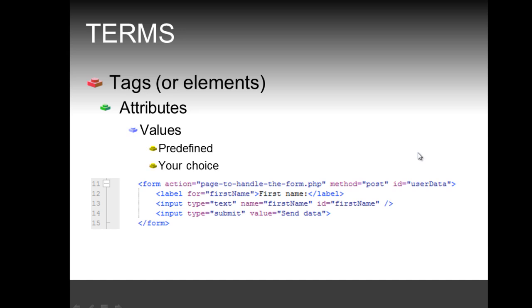It's important to note that in HTML, values are either predefined or of your choice. For example, the method attribute expects predefined values — either 'get' or 'post'. Whereas the ID and action attributes are up to you. The ID should be unique on the page; in this case I've given it the value 'userData' with a capital D — this is also known as camel case.